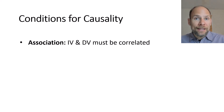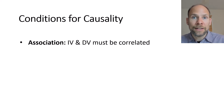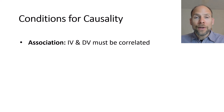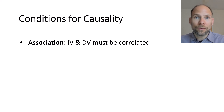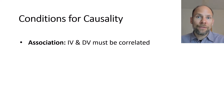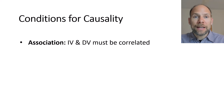However, association is only a necessary condition, but not a sufficient condition for causality — meaning that association or correlation alone is not enough to show causality. You may have heard that correlation does not equal causality, and that's really true. Correlation is a prerequisite for causality, but it's not the same thing. The fact that two things are correlated does not mean that one causes the other, so we need additional conditions.